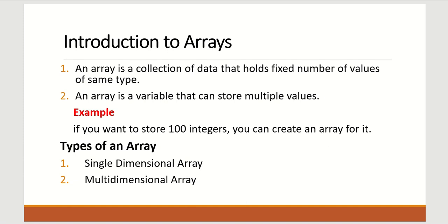Hello everyone. Today we are going to talk about arrays in C programming — introduction as well as examples. An array is a collection of data that holds a fixed number of values at the same time. An array is a variable that can store multiple values like 5 or 10 values. For example, if you want to store 100 integers, you can create an array rather than creating 100 variables.